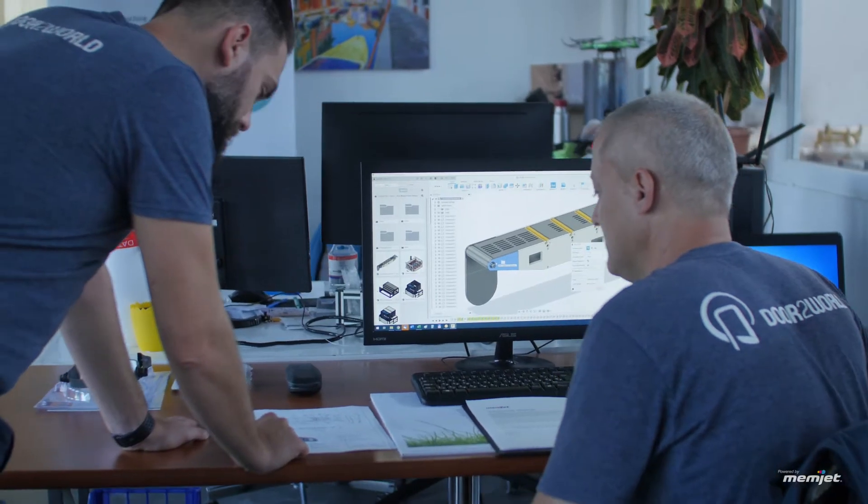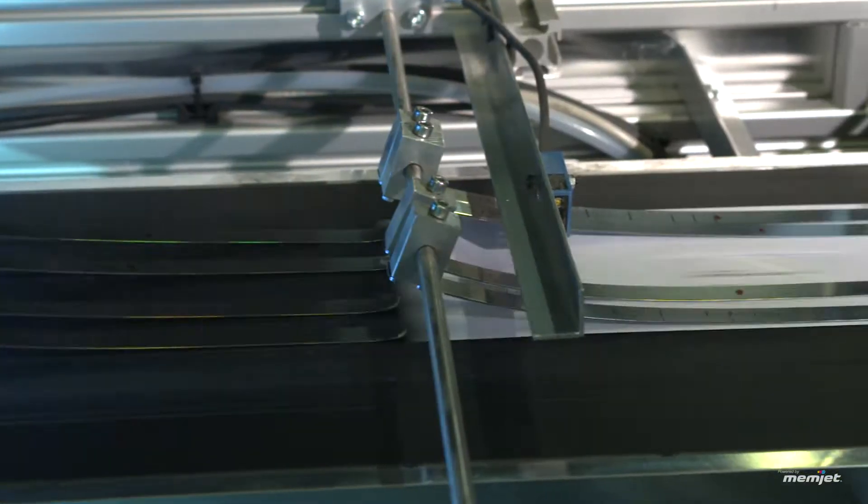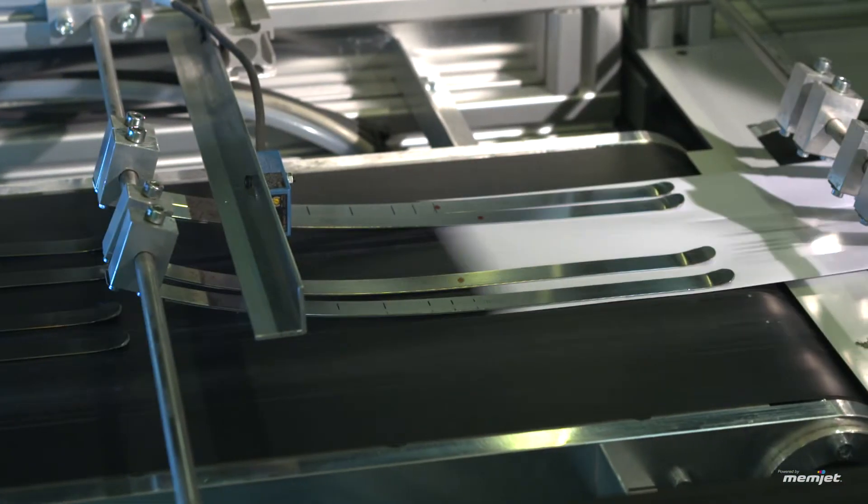I'm Zoltán Szabó, CEO of Vario Printing LCD. The initial idea came up six years ago when we wanted to come up with a solution for the inserter lines to overprint the envelopes right after the inner content is in them and the envelopes are sealed.